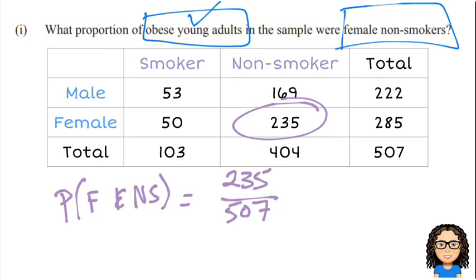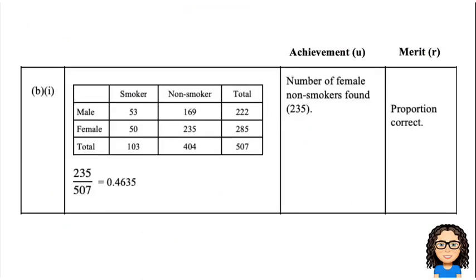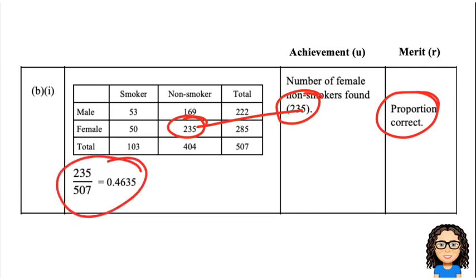It asks for a proportion, so we can leave it as the fraction 235/507. Or if you'd rather turn that into a decimal, 0.4635 is fine as well. Either of those answers gets you through to the merit. Getting to the 235 in the table gets you Level Achieved, and getting to the correct final answer gets you the Merit.